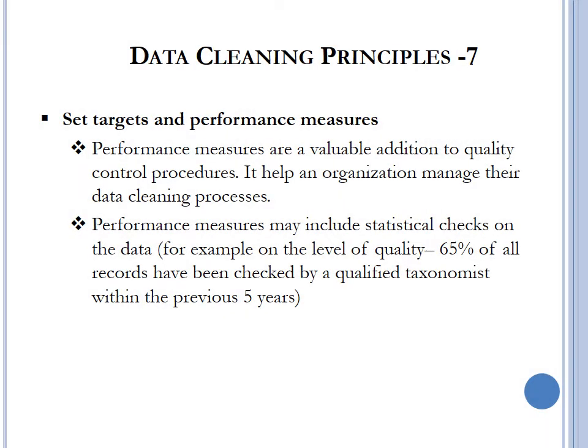Data cleaning principle seven is to set targets and performance measures. Performance measures are a valuable addition to quality control procedures and help an organization manage data cleaning processes. Measurements are a good way to track performance of data quality initiatives. For example, if you have a target that 65% of all records have been checked by a qualified taxonomist within the past five years, you know the goal you should achieve. This gives you a goalpost to measure your initiatives against, and you can report progress to stakeholders or return to the drawing board to adjust initiatives to meet your target.